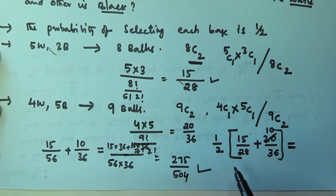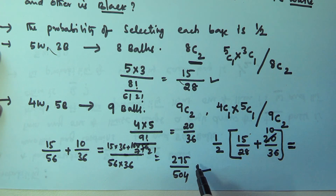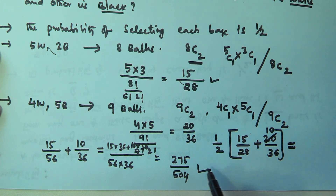Where the first bag contains 5 white balls and 3 black balls, and the second bag contains 4 white balls and 5 black balls. I hope you understood this. Thank you very much for watching this video, and please subscribe to my channel.